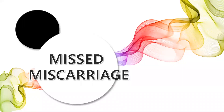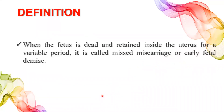Next, let's come to missed miscarriage. When the fetus is dead and retained inside the uterus for a variable period, it is called missed miscarriage or early fetal demise. Just like a missed call on your phone — the fetus is already dead but we do not realize it. When the fetus is dead and retained inside the uterus for a variable period, it is called missed miscarriage or early fetal demise.